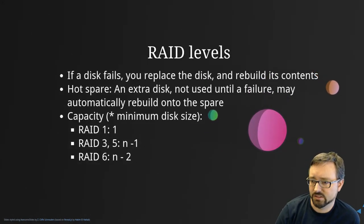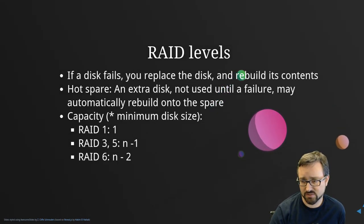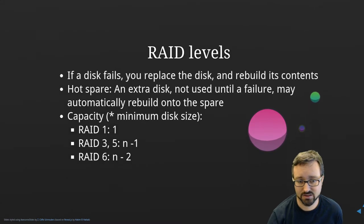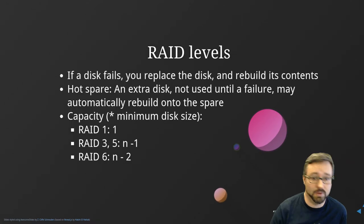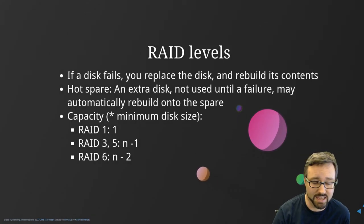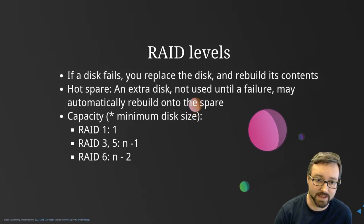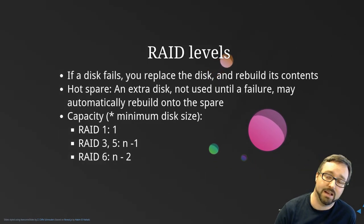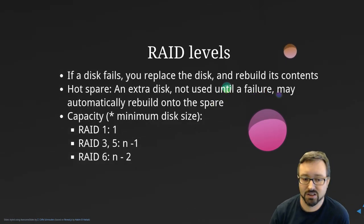When a disk fails you replace the disk and rebuild its contents. A hot spare is an extra disk that sits unused until there's a failure — the array can automatically rebuild onto the spare. You plug in an extra hard drive designated as a hot spare, and when something goes wrong it starts rebuilding automatically. However, you still need to detect that this has happened so you can remove the broken drive and replace it with another hot spare.